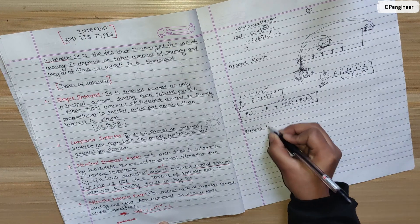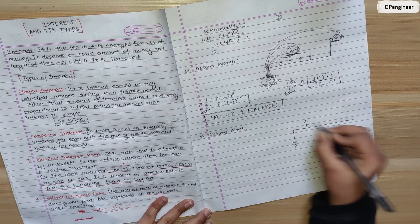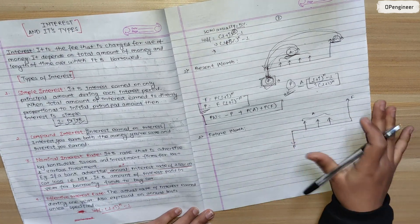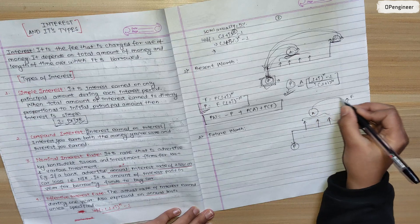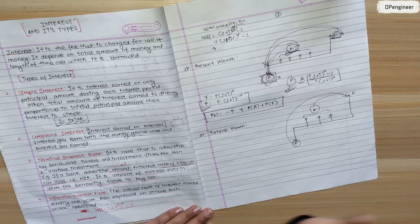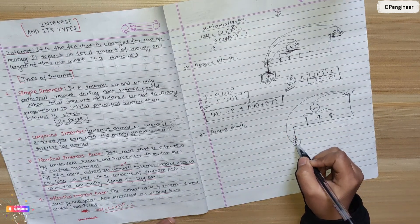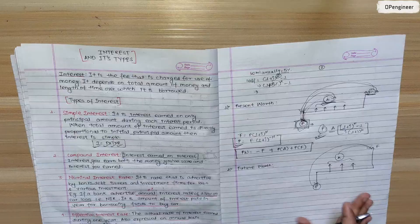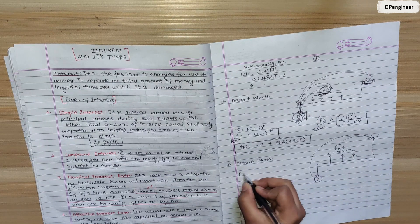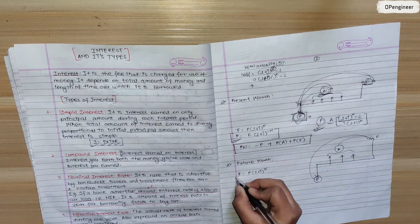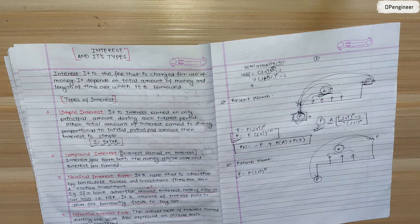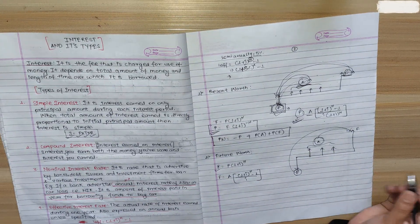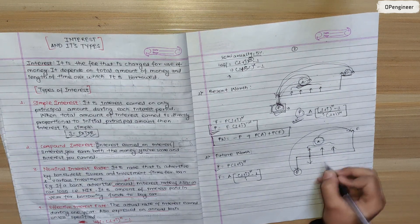Now I will explain future worth. Future worth formula is F equals P times (1 + i)^n. For annual worth converted to future worth, the formula is F equals A times [(1+i)^n - 1] / i. The total future worth includes present worth, annual worth contributions, and the annual benefit minus annual expense.